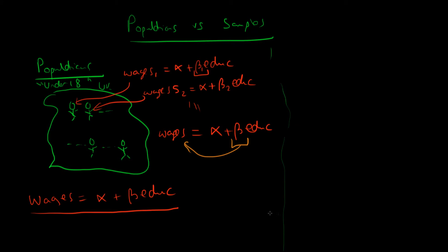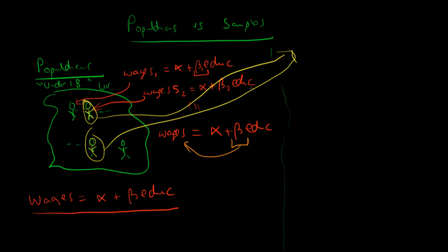That's all fine and well, but in econometrics, if we're interested in evaluating the effect which one year of education has on the population in general, we don't generally have the entirety of the population data to work with — we actually only have what we call a sample.